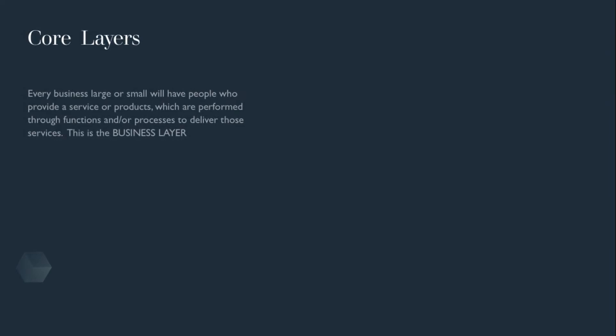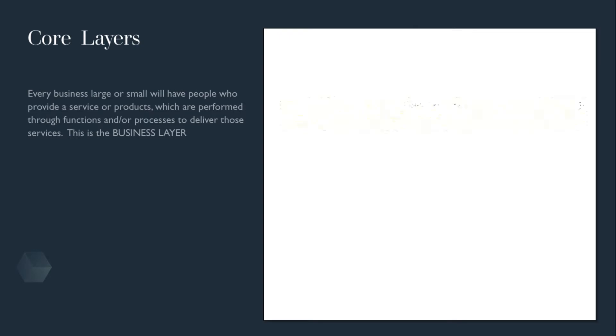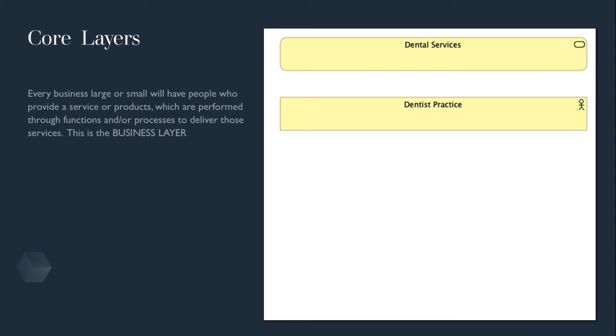Every business, large or small, will have people who provide services or products which perform functions and processes to deliver those services. This is the business layer. Let's take an example of our dental practice that naturally provides a dental service. The dental practice is made up of dentists, receptionists and of course delivers a service to patients.